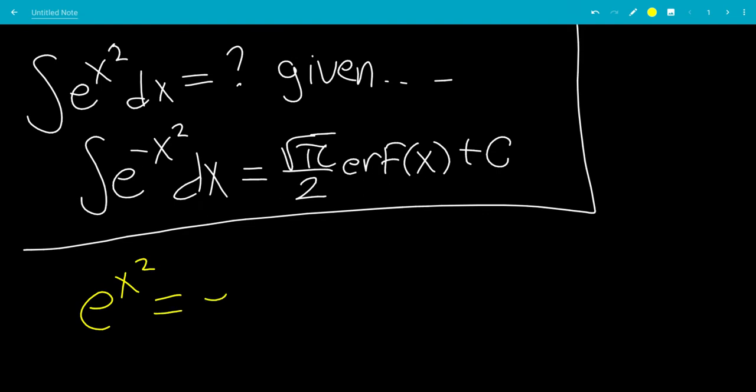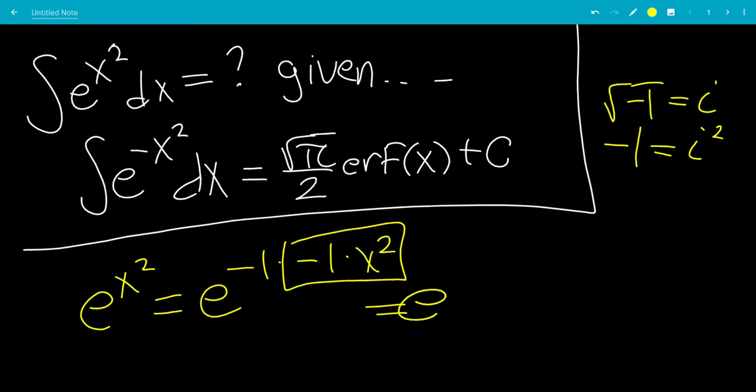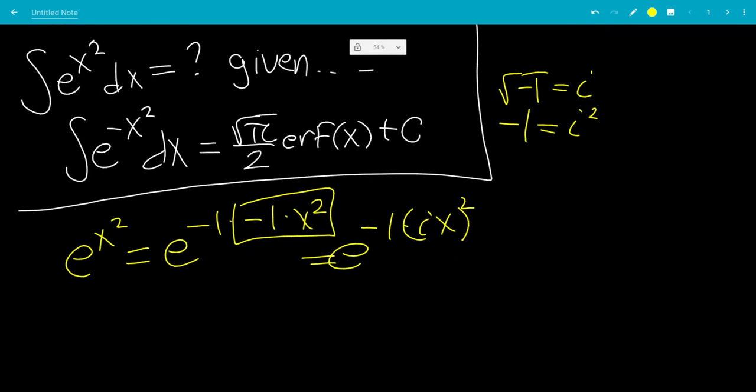e to the x squared equals e to the minus 1 times minus 1 times x squared. So how do we combine these? So minus 1, we have that the square root of minus 1 is defined as i. So when we square both sides, minus 1 equals i squared. So this will be e to the minus 1 times ix quantity squared, because i squared is minus 1 times minus 1 gives us 1 times x squared.